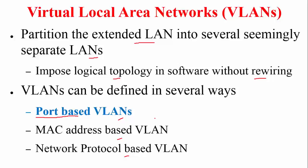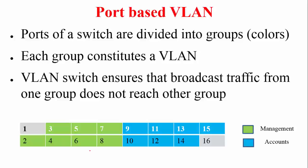In port-based VLANs, the ports of a switch are divided into groups. For example, on a 16-port switch, ports are divided into two groups — it could be more depending on how many VLANs you want. We refer to groups by colors: green for management and blue for accounts. Each group constitutes a VLAN. An intelligent VLAN switch can ensure that broadcast traffic from one group does not reach the other group.